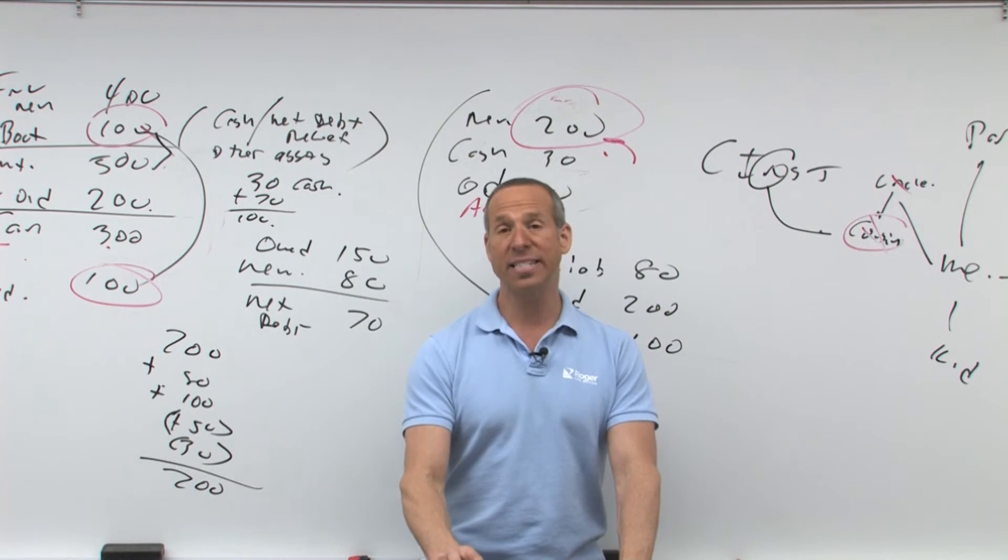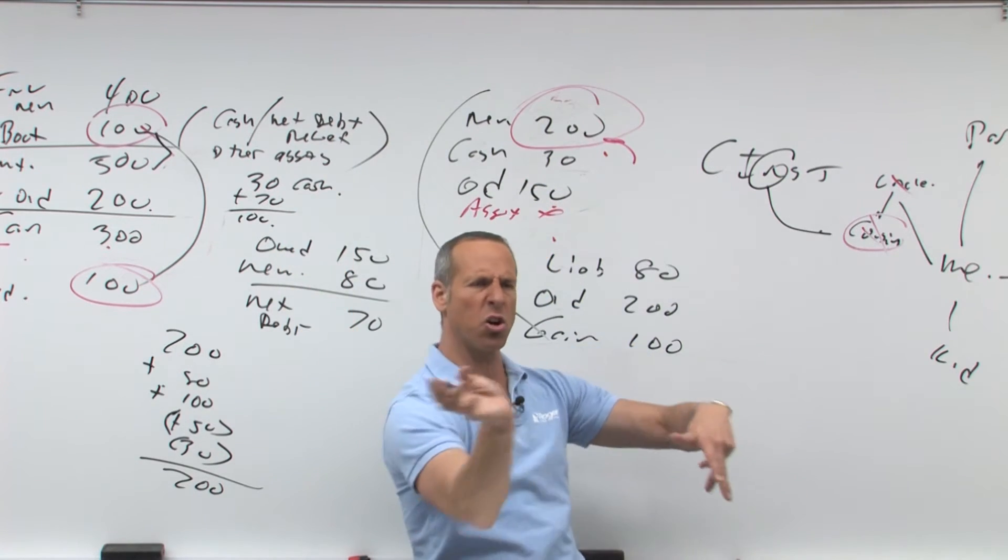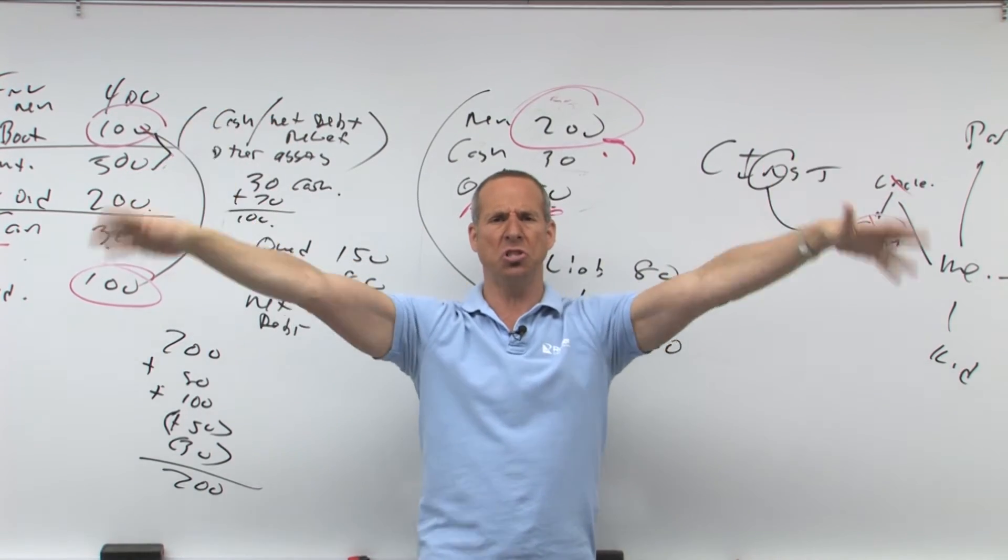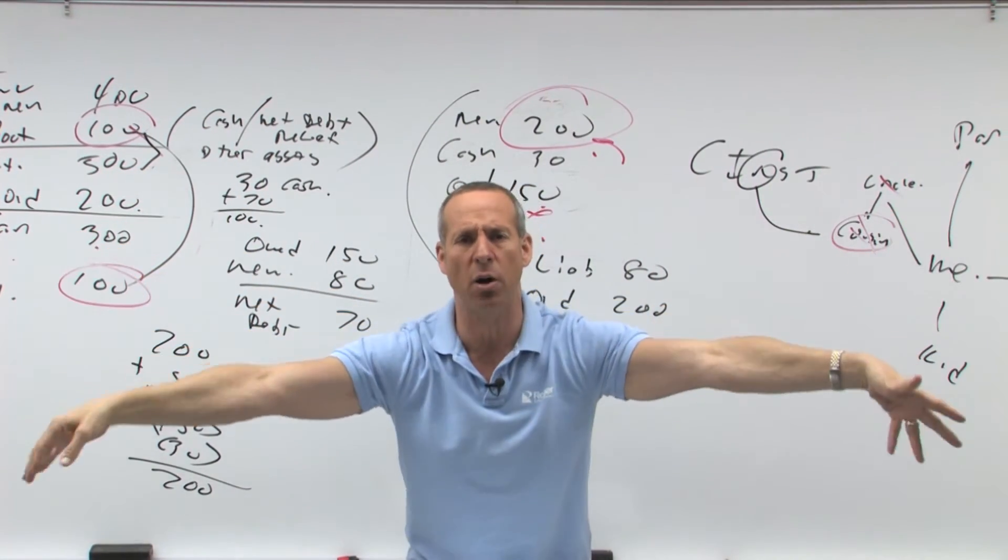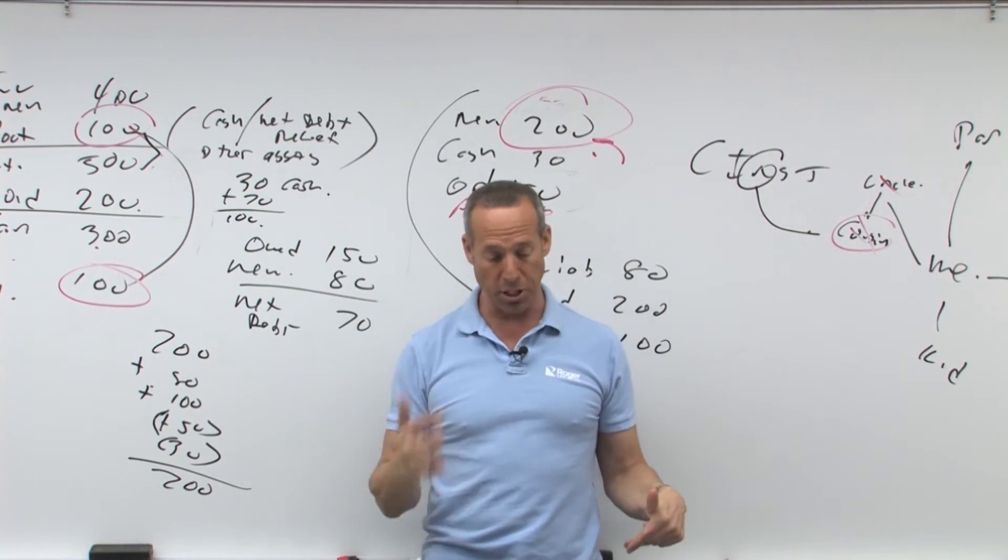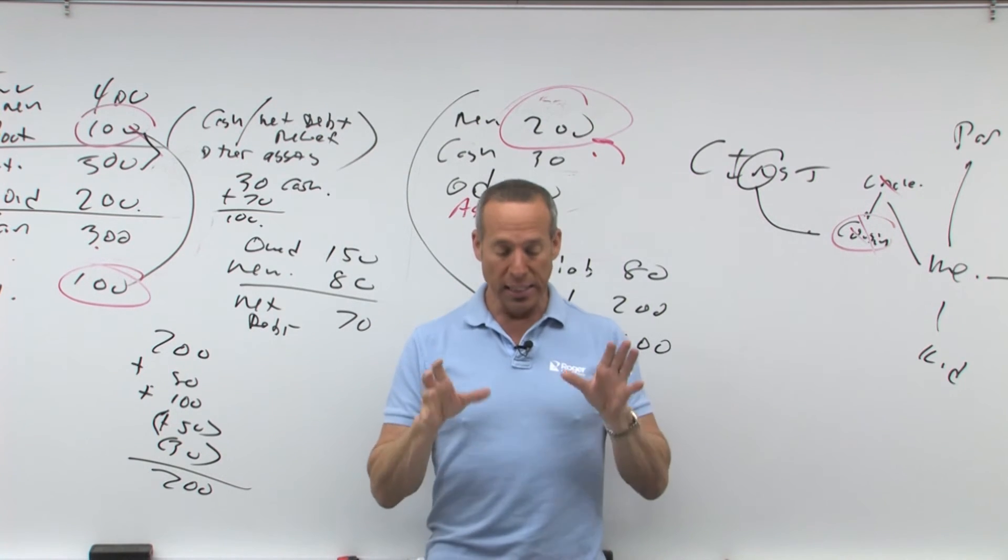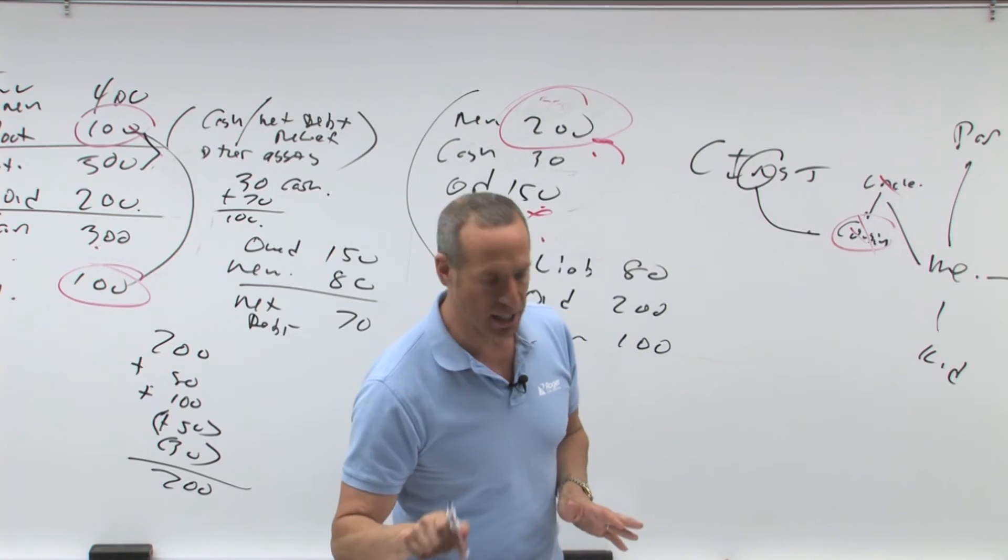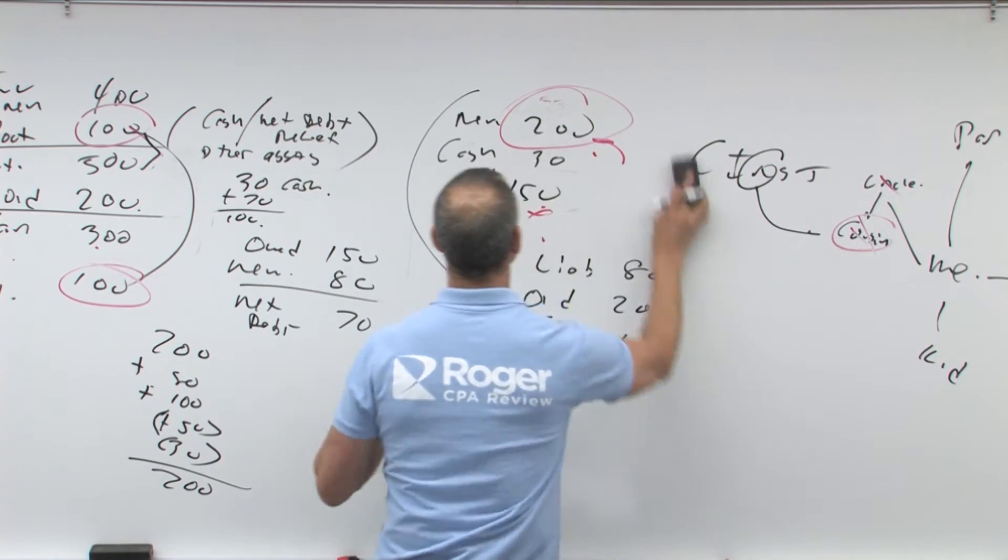Another one would be, let's say there's this huge hurricane, earthquake, tornado comes through and the government steps in and says this is considered a federal disaster area. That would be another situation. Now here's the deal. Let's say, for example, this happens and this is called a 1033 exchange, by the way, a 1033.